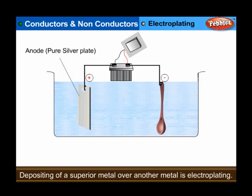Usually, copper sulphate is used as electrolyte for copper plating, nickel ammonium sulphate for nickel plating, and double cyanides of potassium and silver or gold for silver or gold plating. The plated metal forms a smooth, uniform, and strong layer on the article. This layer protects the article from corrosion and wear and tear.